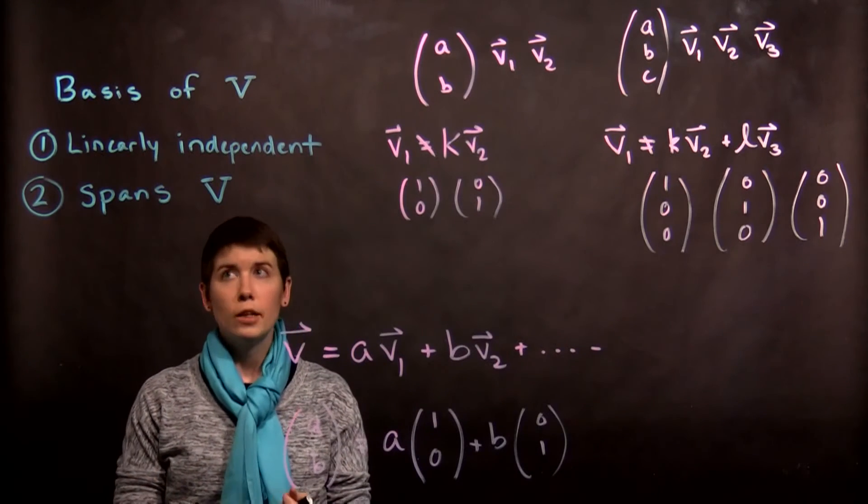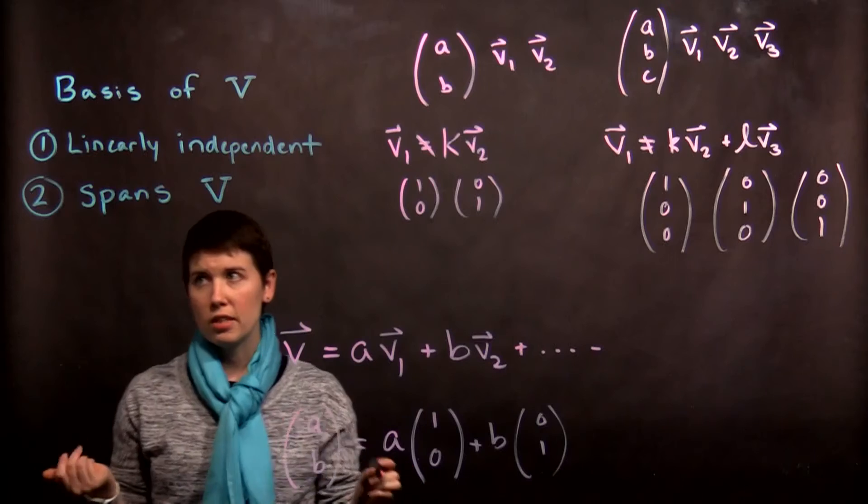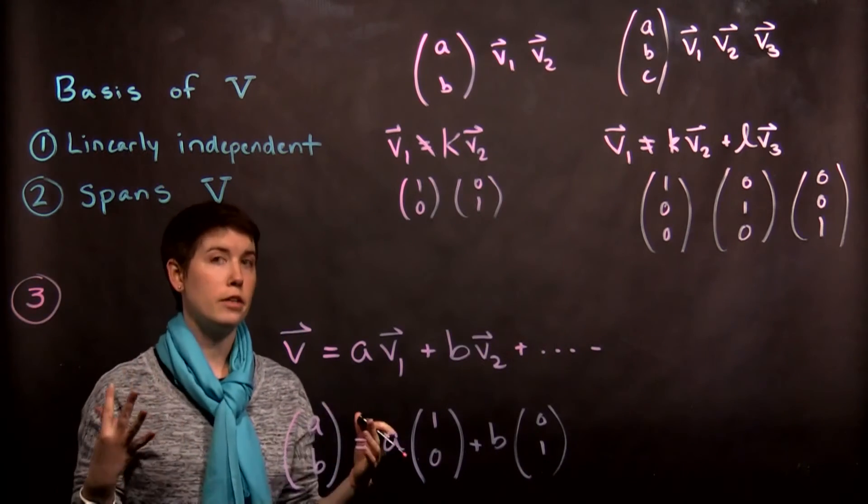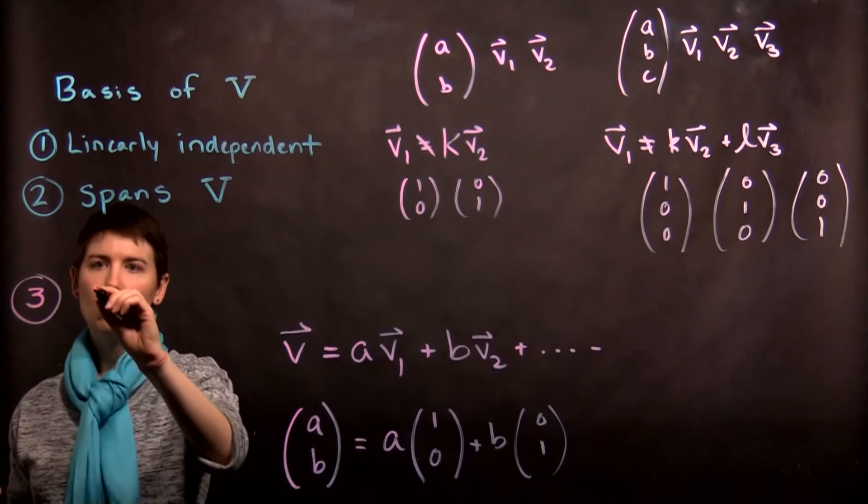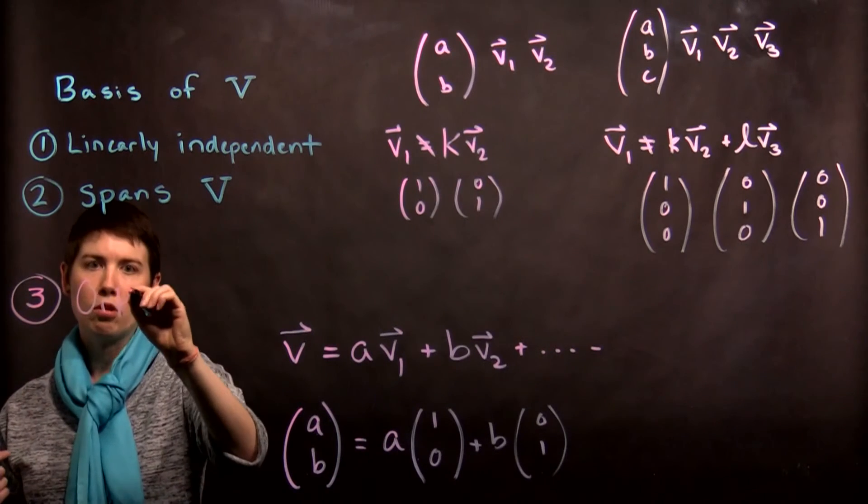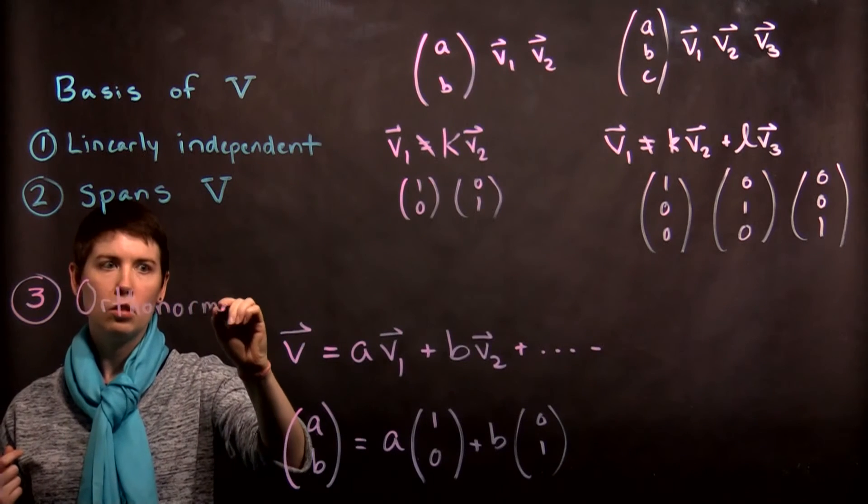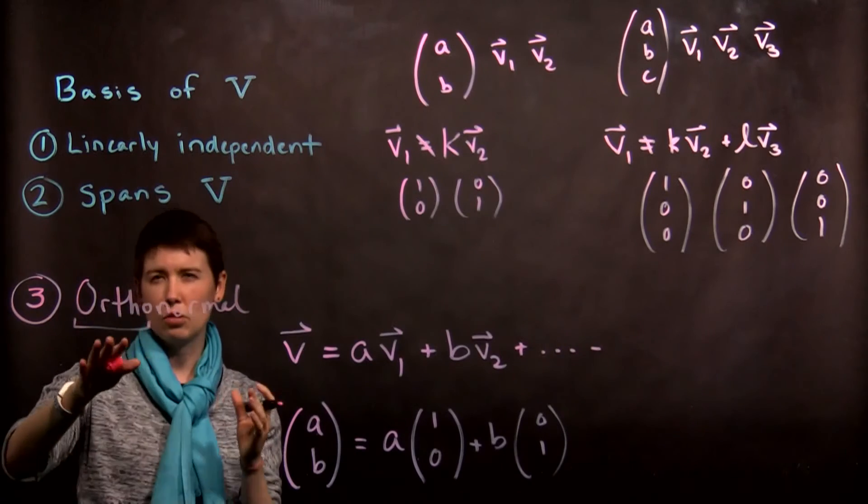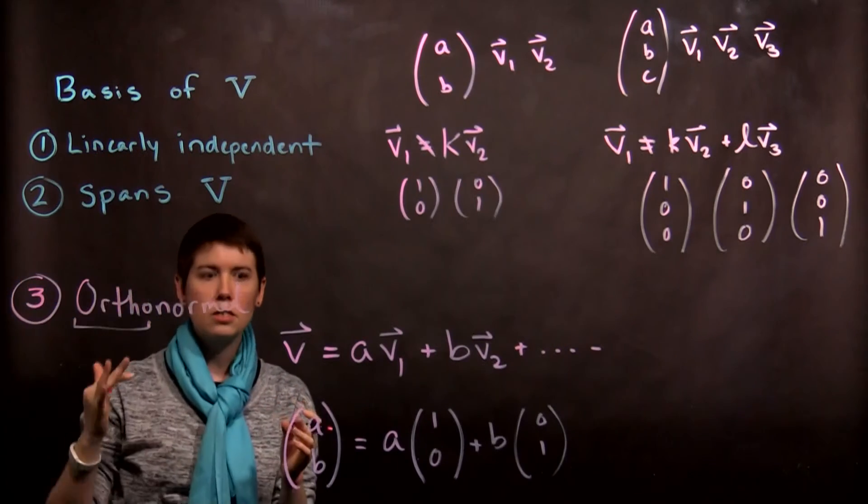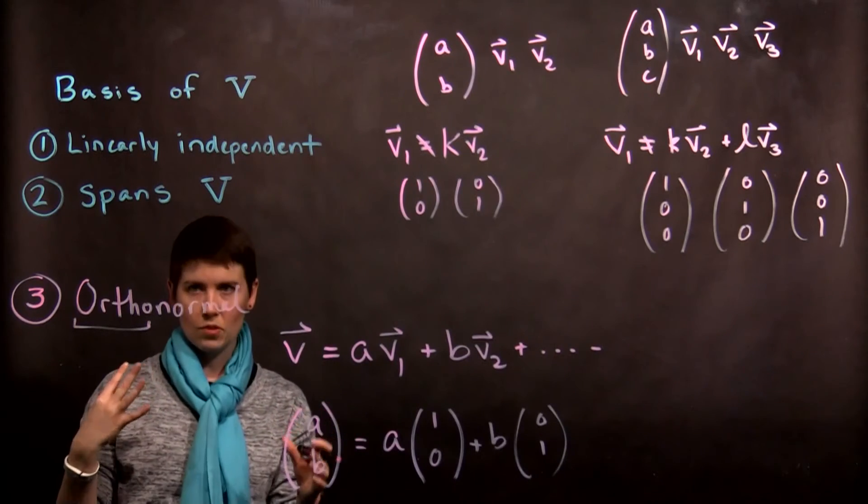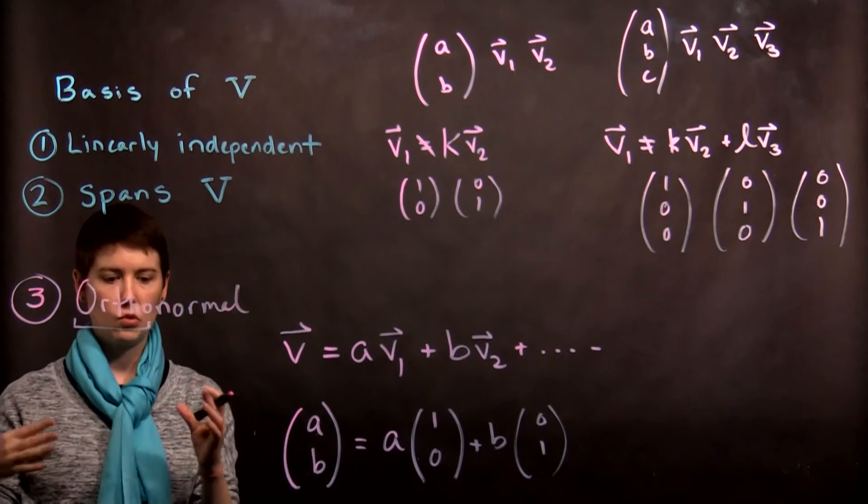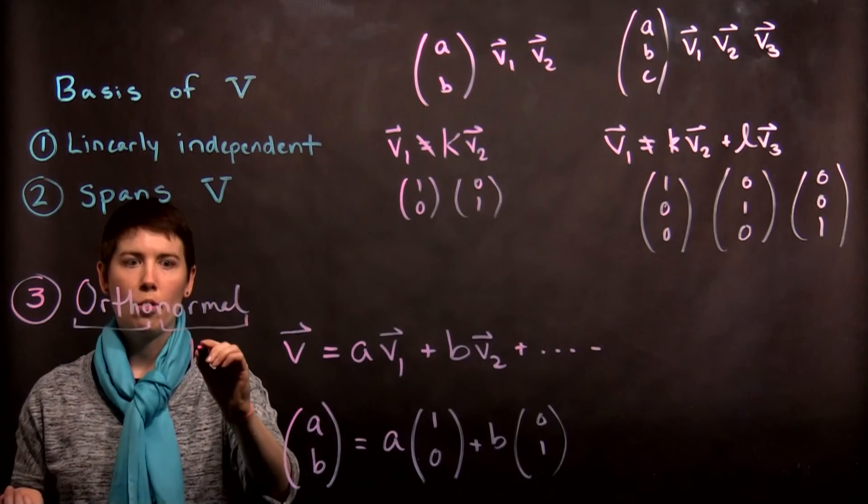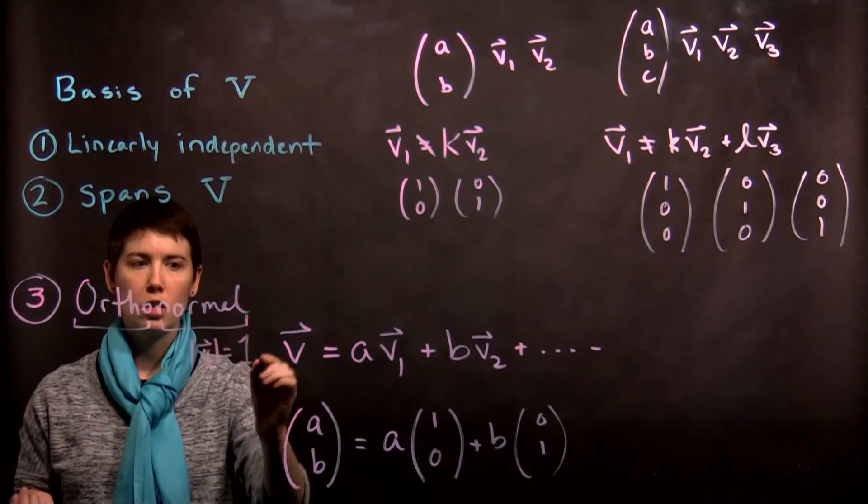Now the third thing that we're normally going to do, which is not required from a mathematical point of view, but we normally want an orthonormal basis. So this ortho part is that orthogonal, so linearly independent to the extreme, such that any two vectors have zero overlap. And normal means that when you take any of their magnitudes it equals to 1.